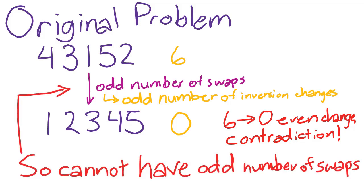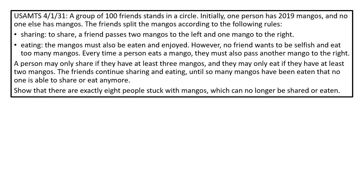Thus, we have proved that it is impossible to swap the numbers 4, 3, 1, 5, 2 into order with an odd number of swaps, completing the problem. The previous three problems were mostly theory and folklore problems, but now we're going to take a stab at a competition math-proof problem, USAMTS 4-1-31. The problem statement is as follows.